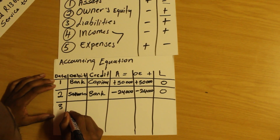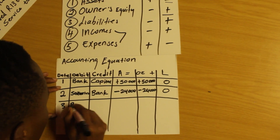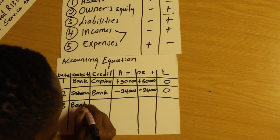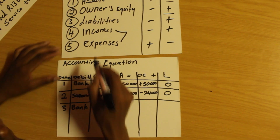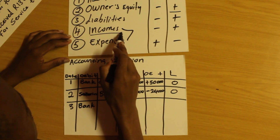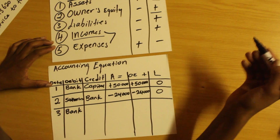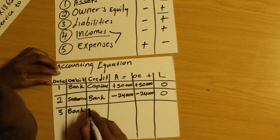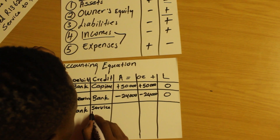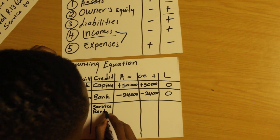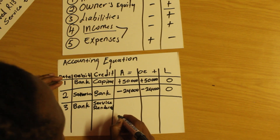Assets increase on the debit side, so we're going to debit bank. And then we will credit service rendered. Service rendered is an income account — we're rendering more services to customers, so the income is increasing. That's why we credit service rendered.